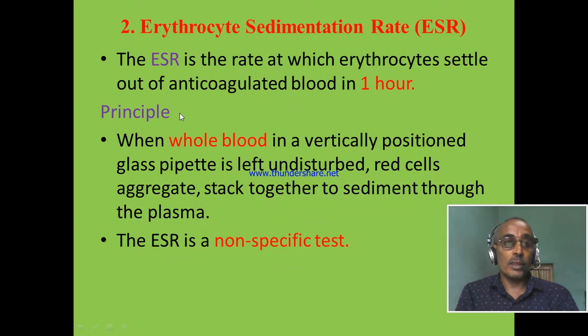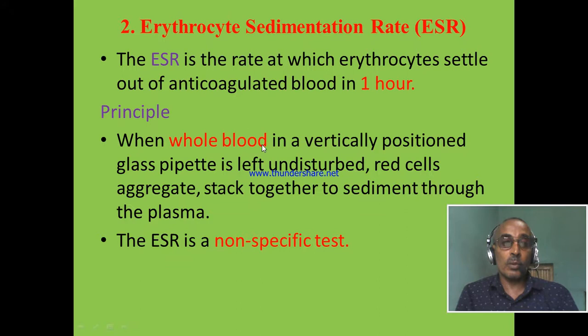Principle of the test: When whole blood — which is blood mixed with anticoagulant to prevent clotting — when this kind of blood sample is vertically positioned in a glass pipette, red blood cells will aggregate, stick together, and sediment at the bottom of the tube. By this, the plasma length from top to the bottom will increase, and the plasma length in millimeters per hour will be reported as the value of ESR.